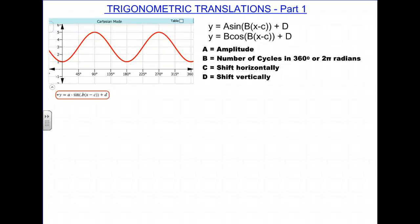Today we're going to talk about trigonometric translations of the sine and cosine curves. Just as a reminder, you'll see at the top here we are dealing with two equations. Y equals A, the sine of B times X minus C plus D, and Y equals A, the cosine of B times X minus C plus D.